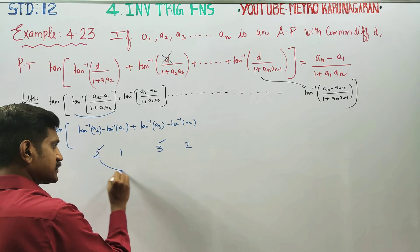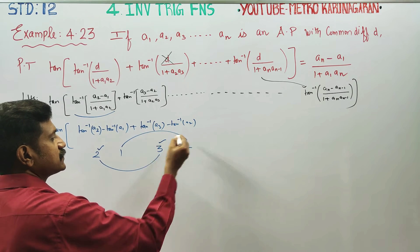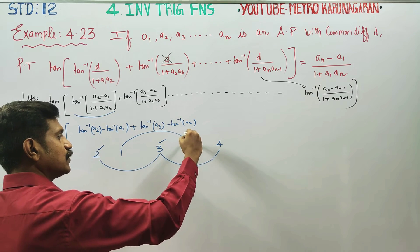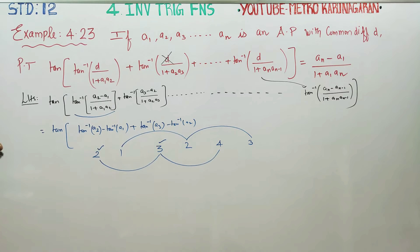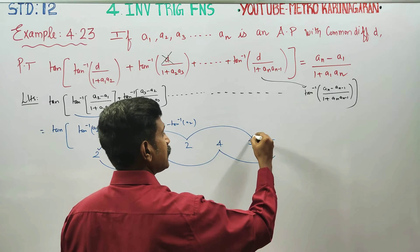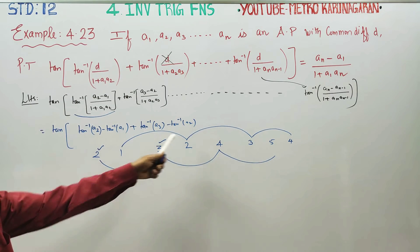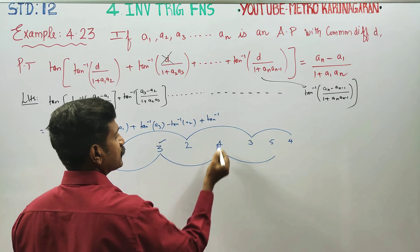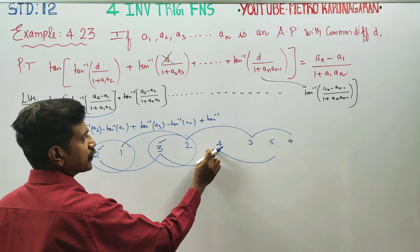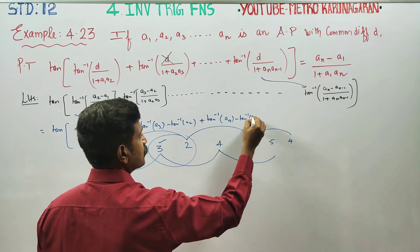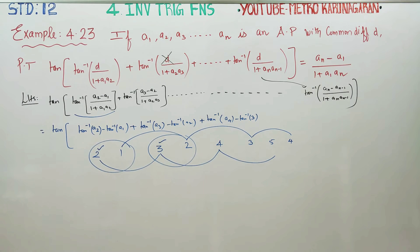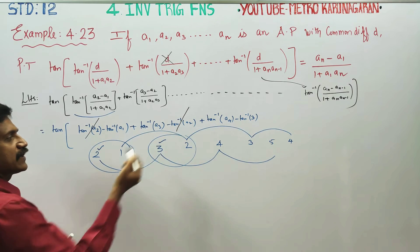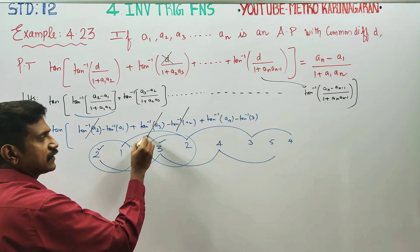After applying the formula, the sum telescopes: tan inverse a2 minus tan inverse a1, plus tan inverse a3 minus tan inverse a2, and so on, up to tan inverse aₙ minus tan inverse aₙ₋₁. Cancellation occurs — for example, tan inverse a4 minus tan inverse a3 cancel with subsequent terms. Negative a3 terms are cancelled throughout.